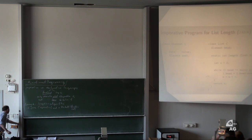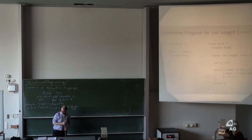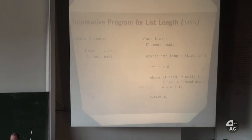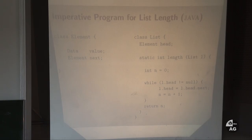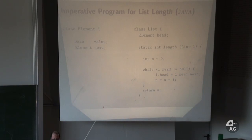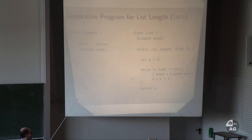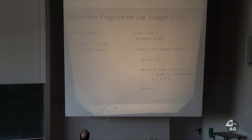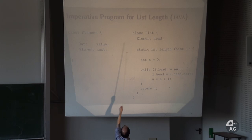To illustrate what functional programming is, let's look at the length program in Java and in Haskell. So how would we solve the problem in Java? The idea is we have a linear list and the goal is to compute its length. In Java we could have two classes: a class element and a class list. List has one field called head, of type element. Elements have a value and a pointer to the next field. So to realize a list, we would have an object of type list with a field called head pointing to the first element.